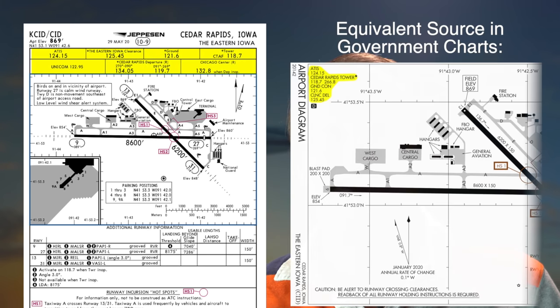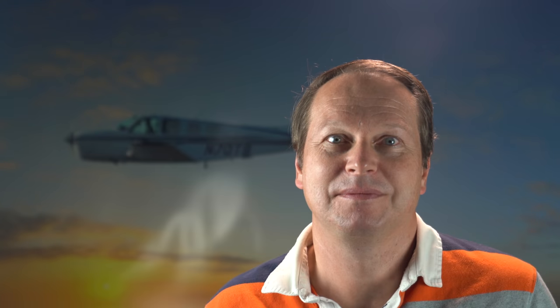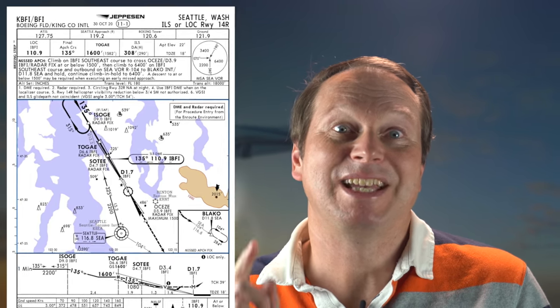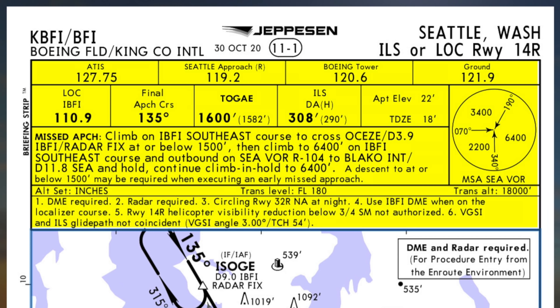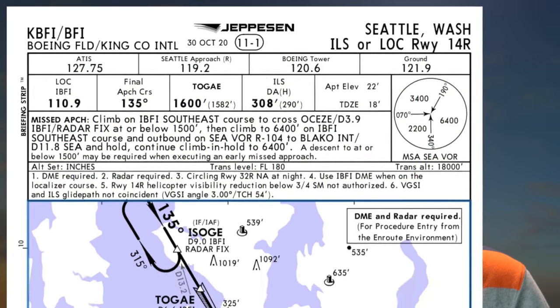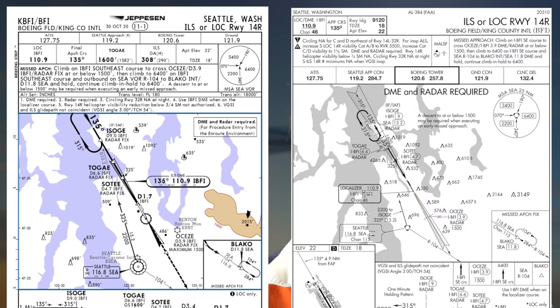I also think that the radio frequencies are easier to read on the Jeppesen charts. Moving on to approach charts — here's an example from Boeing Field in Seattle, Washington. At the top of the chart is the briefing strip, a term Jeppesen has coined and actually trademarked. It has the most important bits and pieces of information all in one place, which should be reviewed in the approach briefing. Looking at the plan view, the one from Jeppesen looks a little cleaner, maybe due to the FAA's attempt to depict every single obstacle instead of just the most relevant ones.